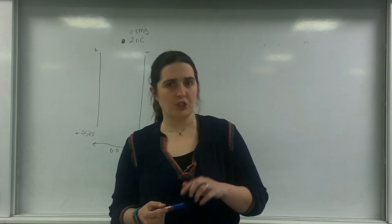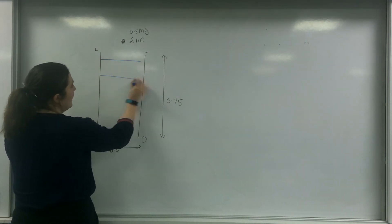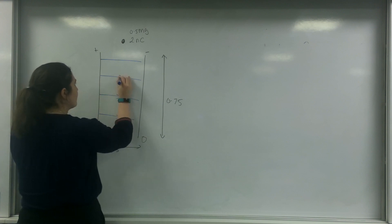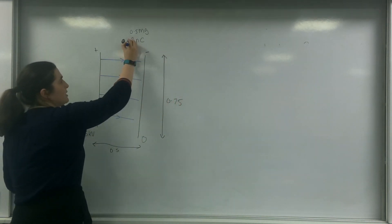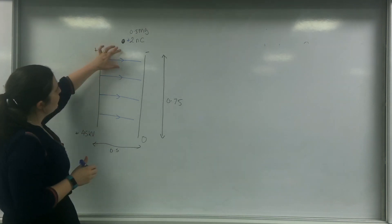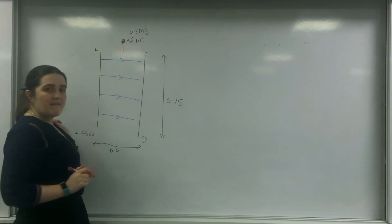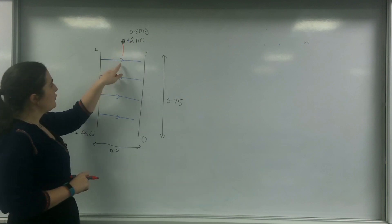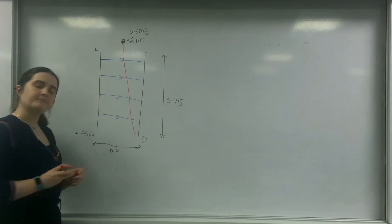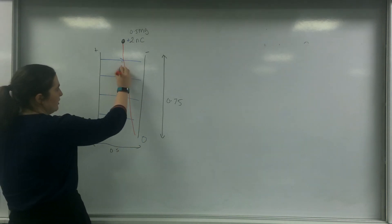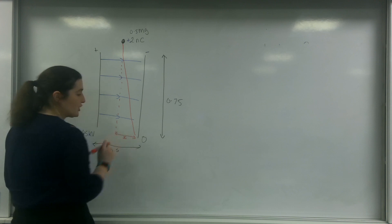Now what is a little bit different from first year is this: I have an electric field like this. When my charged particle — positive 2 nanocoulombs — falls in here, it's going to be affected by these field lines. Because it is a positive charge, it is going to follow the direction of these field lines, so it's actually going to start deflecting like this. We're going to use SUVAT to work out this deflection.